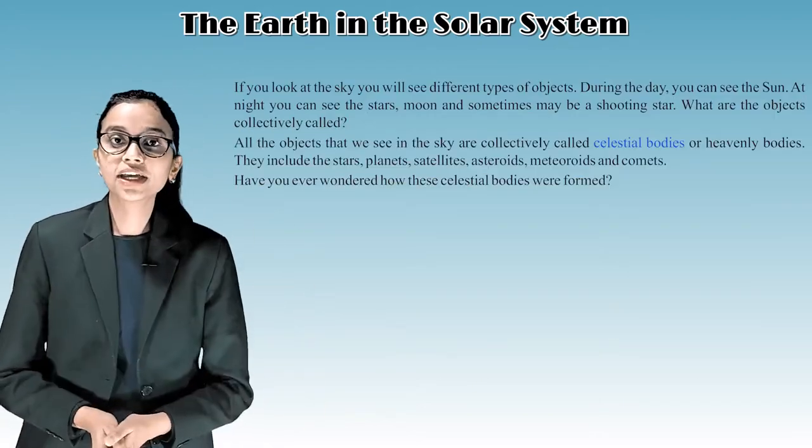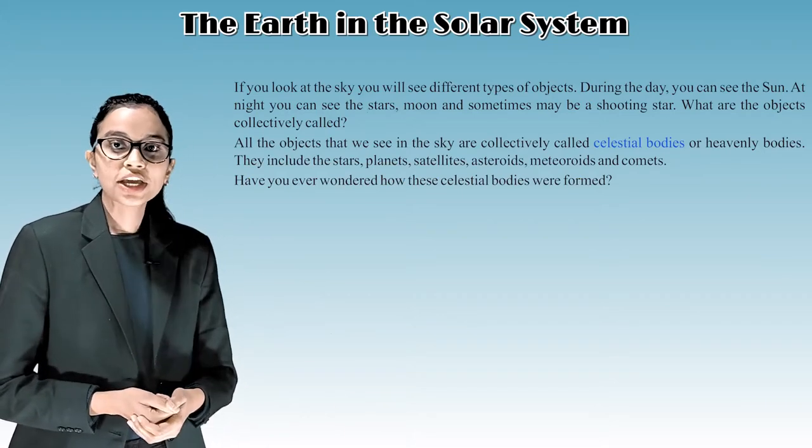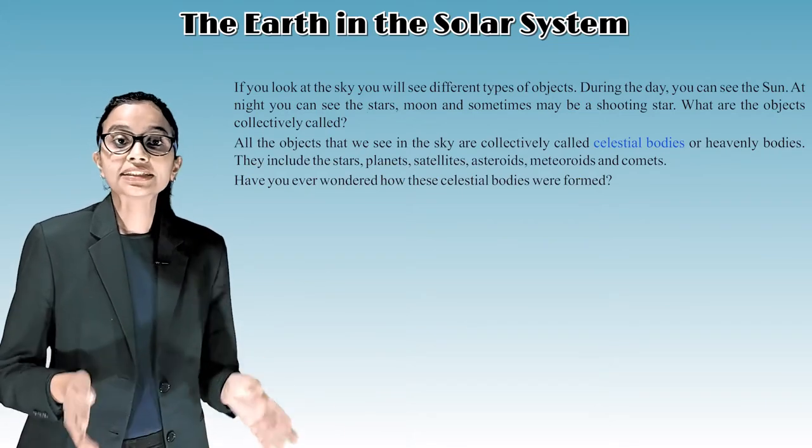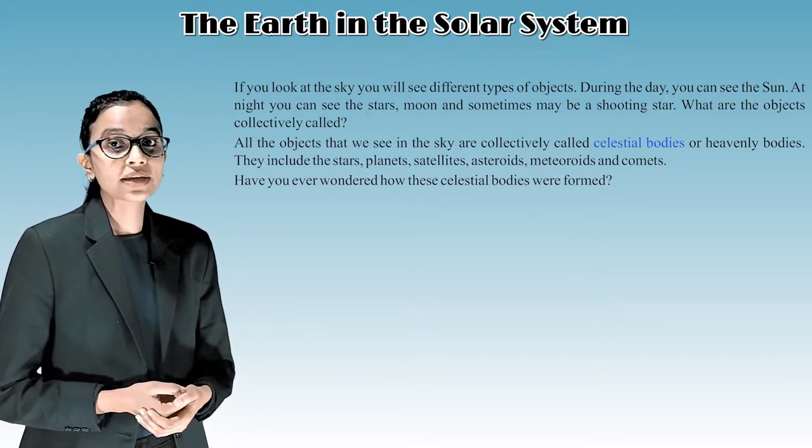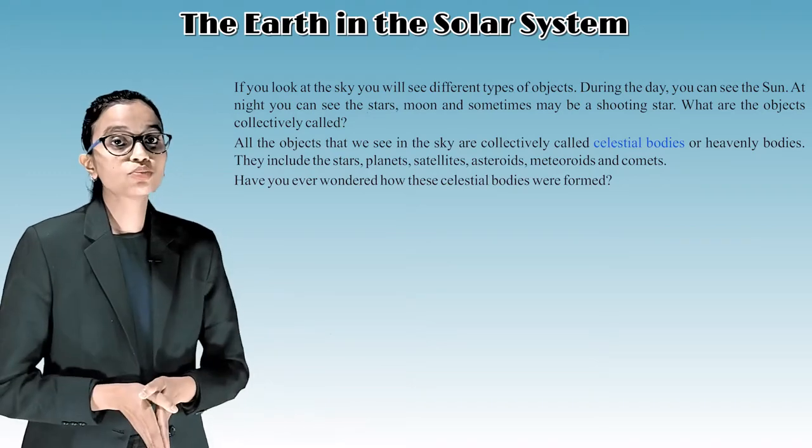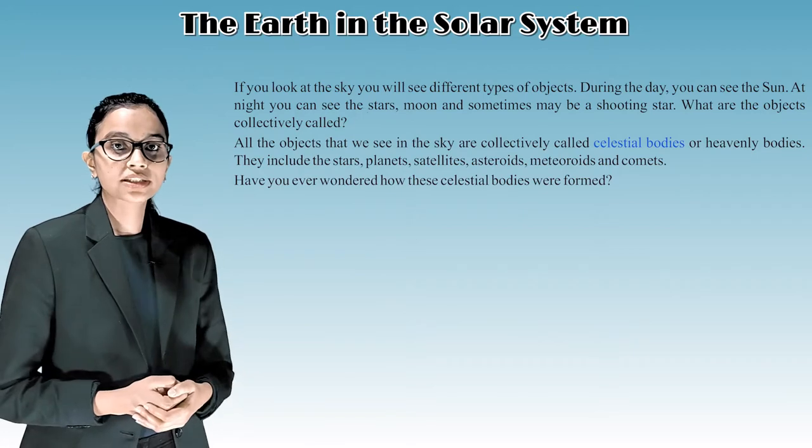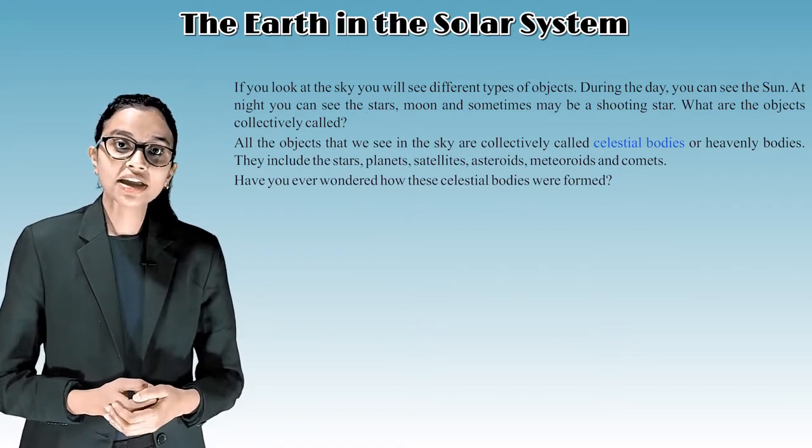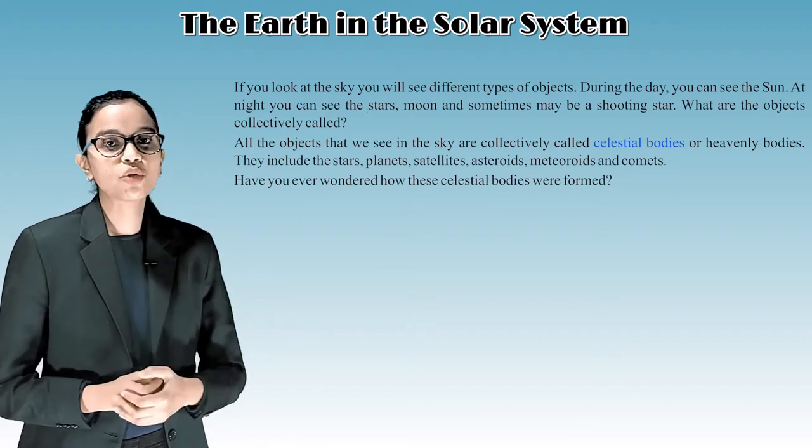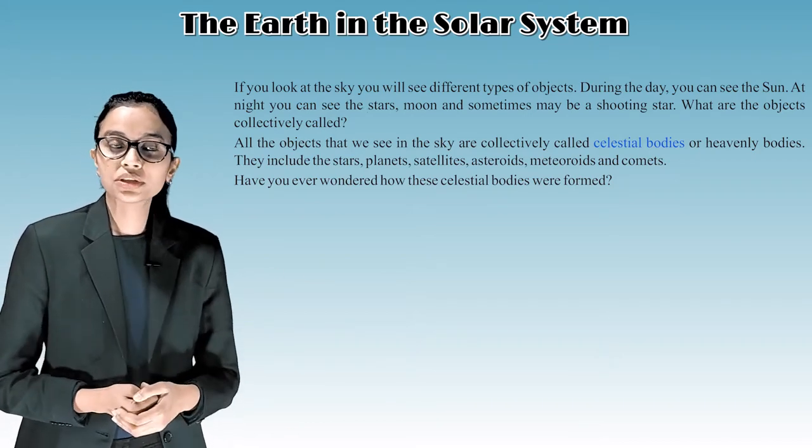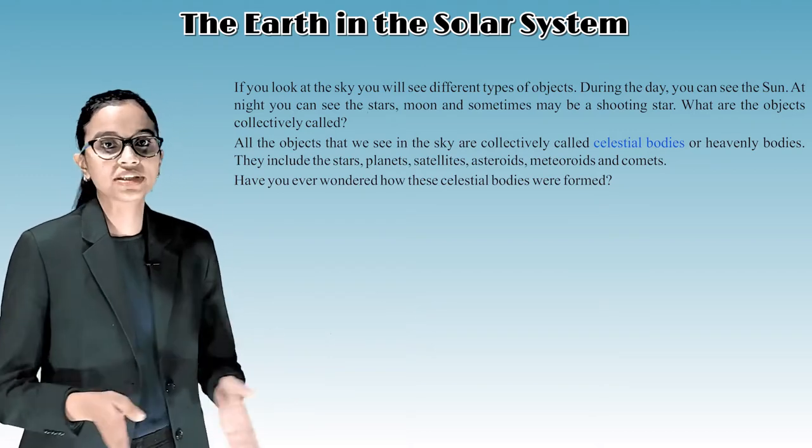If you look at the sky, you will see different types of objects. During the day, you can see the sun. At night, you can see the stars, moon and sometimes maybe shooting stars. All the objects that we see in the sky are collectively called celestial bodies or heavenly bodies. They include the stars, planets, satellites, asteroids, meteoroids and comets.